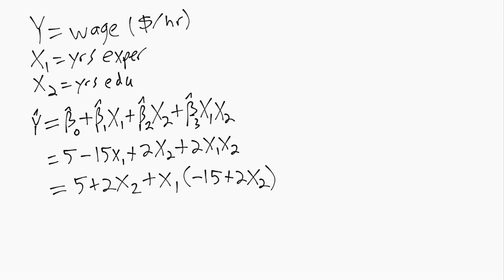In general, this would be beta hat 1 plus beta hat 3 times x2. So now we can see whether or not that slope is positive will depend on the years of education that we are looking at.